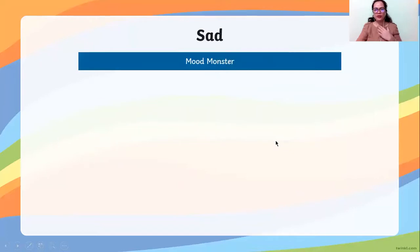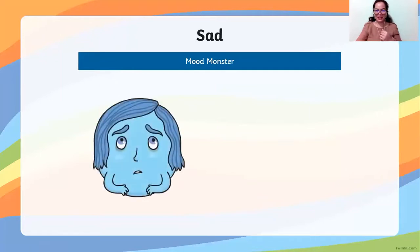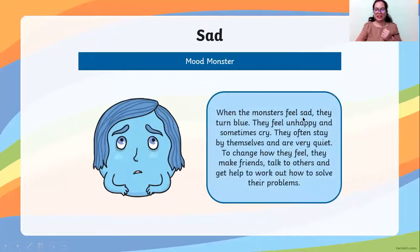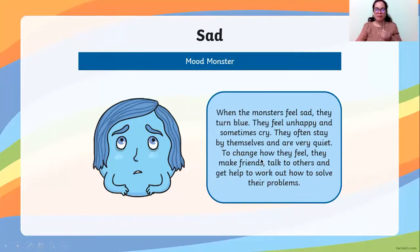Sad — how do you feel if you are sad? When the monsters feel sad, they turn blue. They feel unhappy and sometimes cry. They often stay by themselves and are very quiet. To change how they feel, they make friends, talk to others, and get help to work out how to solve their problems. If you are sad, you are quiet — and you need to go talk with your friends.